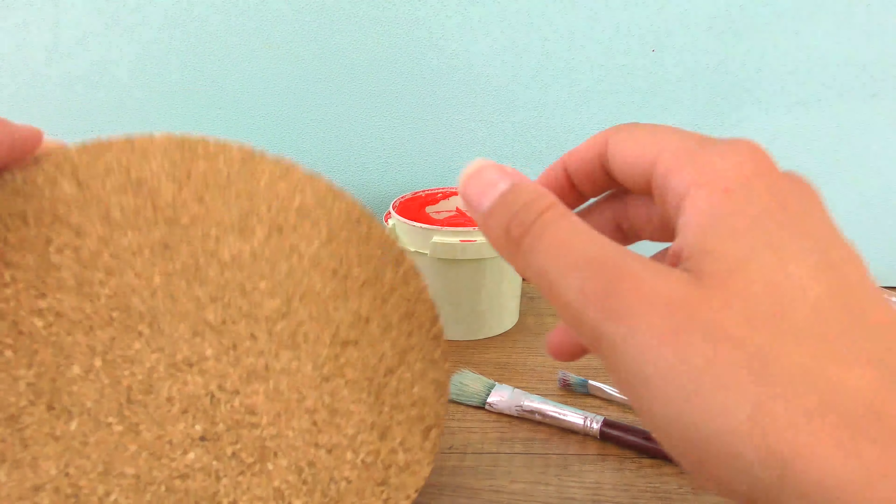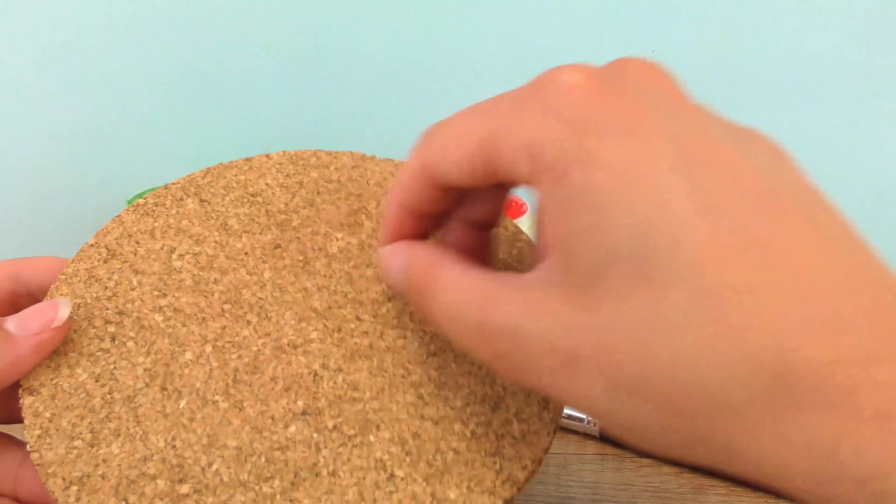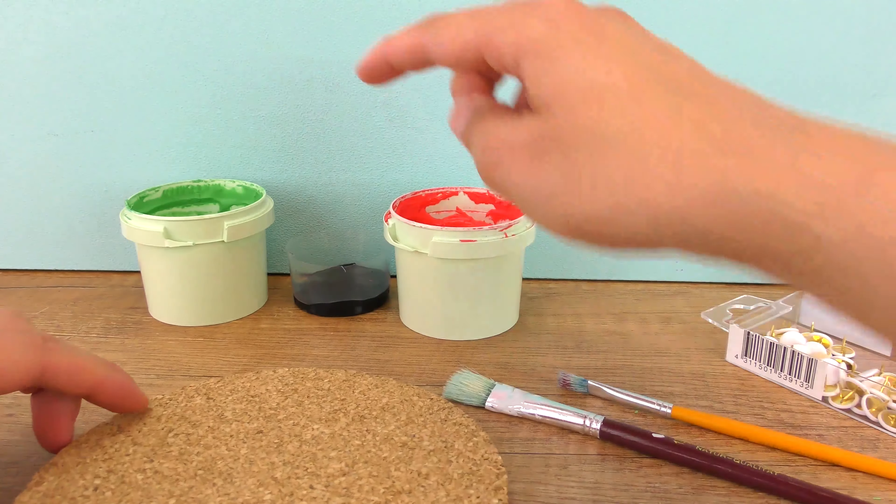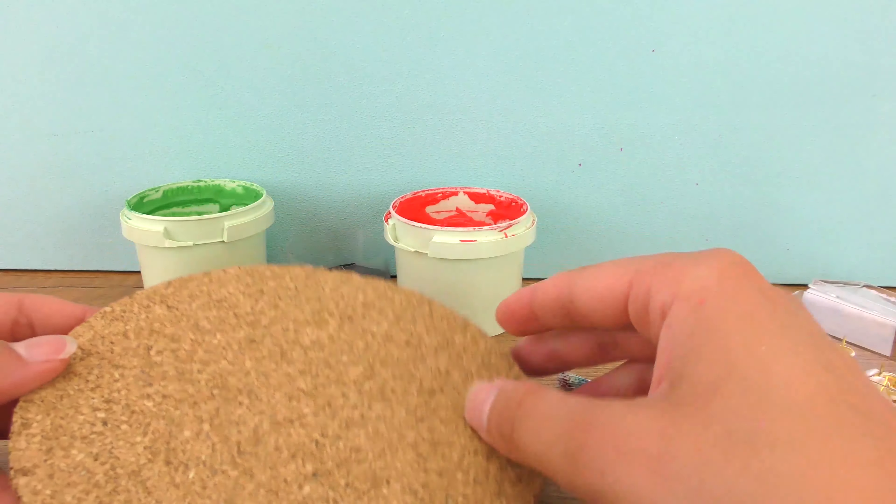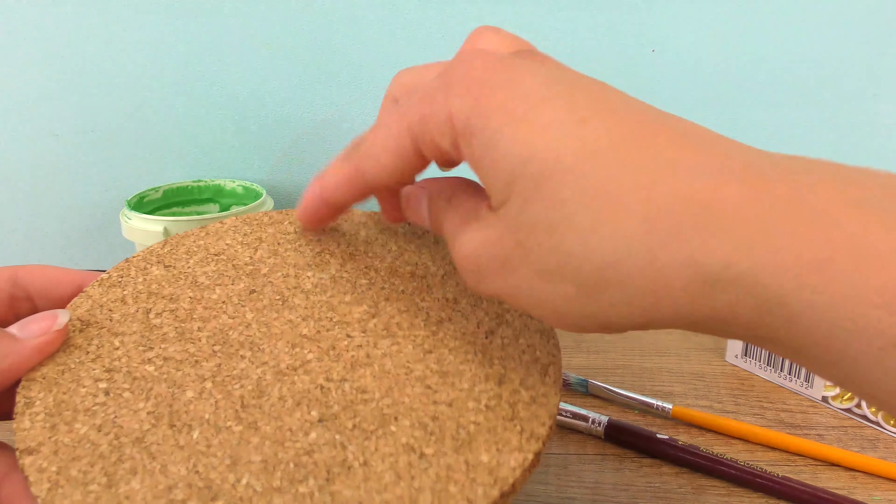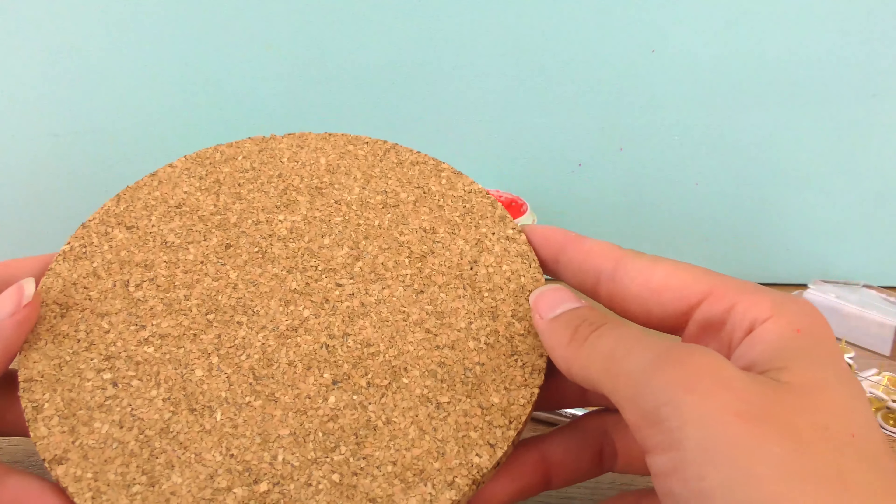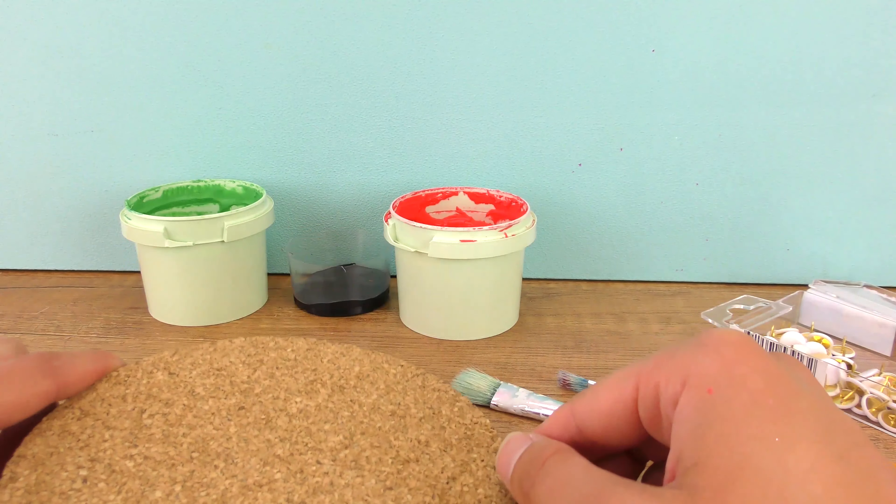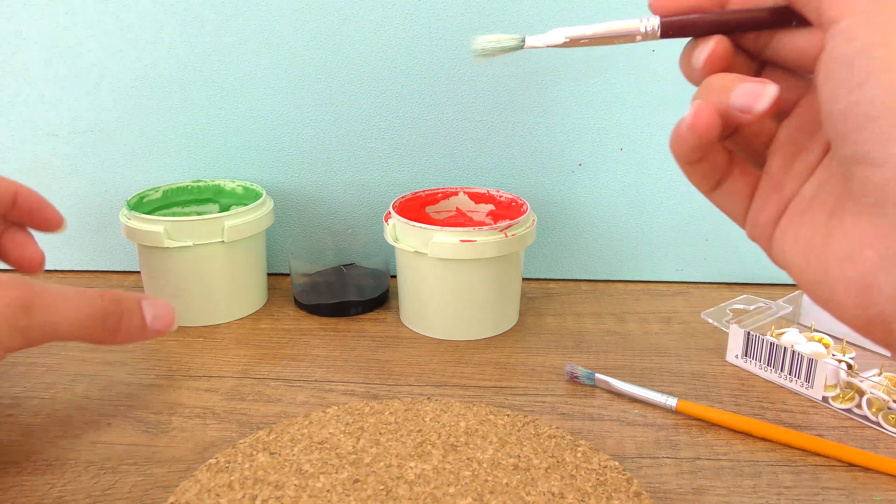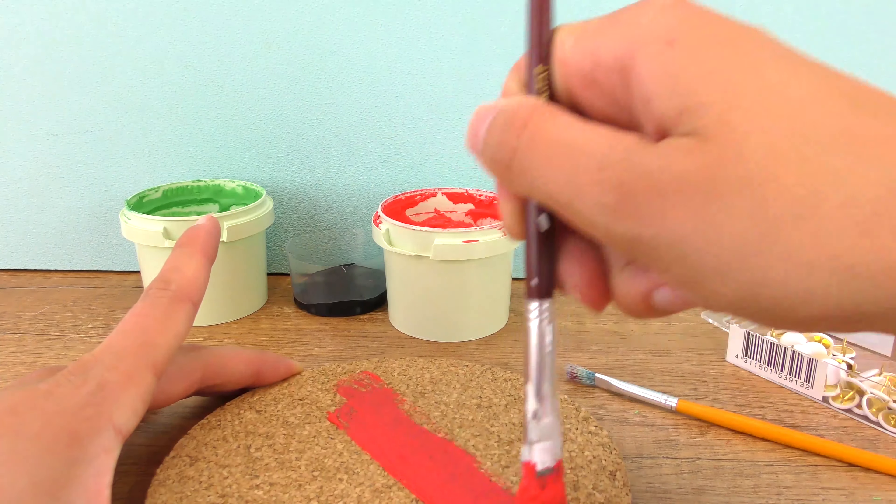You can do one plain color or a pattern or pretty much whatever you like. The colors here are for a watermelon. I'm going to color red here in the middle, green on the edges, and I'm going to do a couple of seeds inside. Of course you can choose your own colors if you want to do something else, but I'll show you on this example. Let's get started.